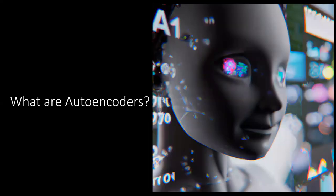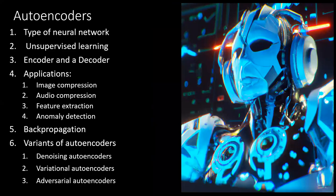What exactly are autoencoders? Autoencoders are a type of neural network and an example of unsupervised learning. In a typical autoencoder, we have the encoder as well as the decoder. Applications include image compression, audio compression, feature extraction, and anomaly detection. They are trained using back propagation. Variants include denoising autoencoders, variational autoencoders, and adversarial autoencoders.